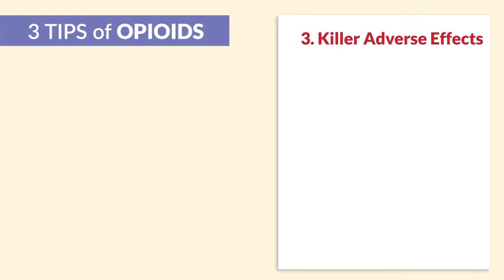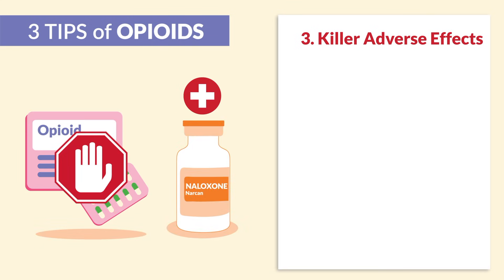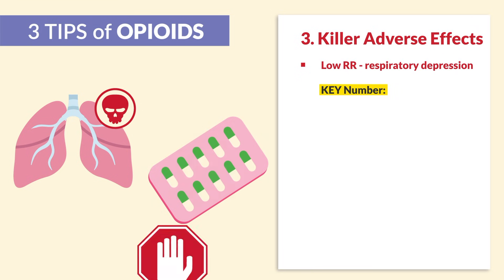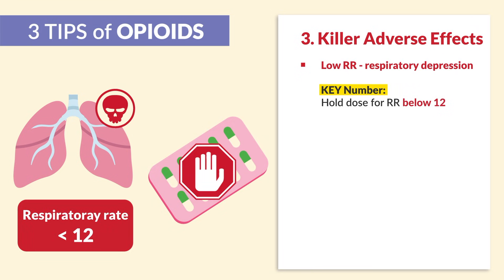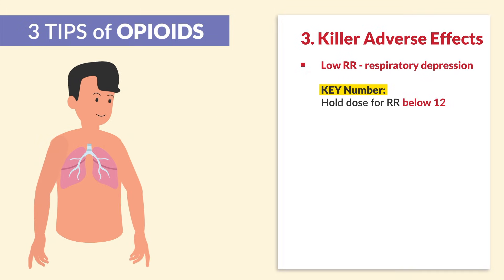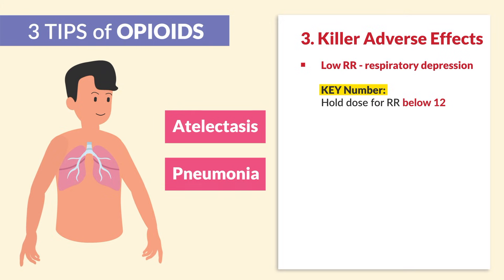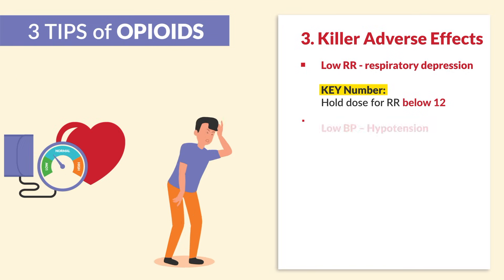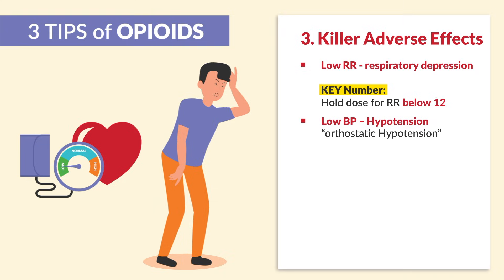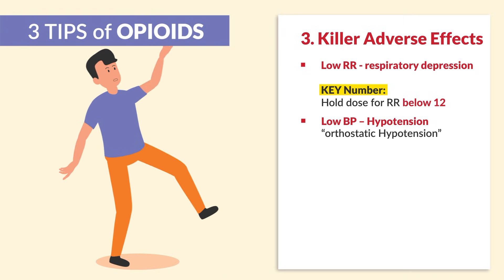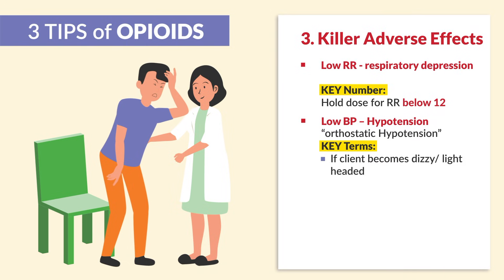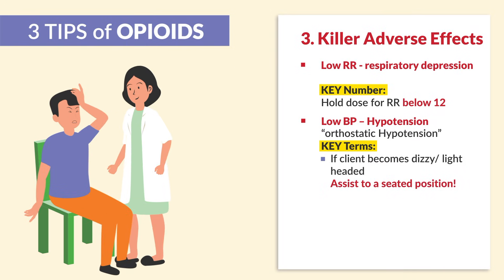Tip number three covers the killer side effects — when do we stop and give the antidote Narcan? For low respiratory rate — key term: respiratory depression — the key number is we hold the dose for a respiratory rate below 12. We always teach deep breathing exercises to prevent atelectasis and pneumonia, but we never hold the drug just because the patient is not practicing their deep breathing exercises — we still give the med. For low BP, also known as hypotension or orthostatic hypotension, we teach patients slow position changes to prevent fall risk. If the client becomes dizzy or lightheaded, immediately assist the patient to a seated position.